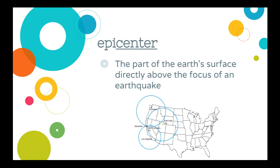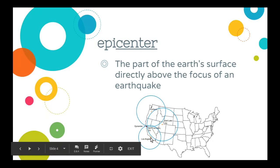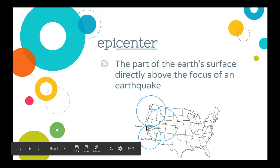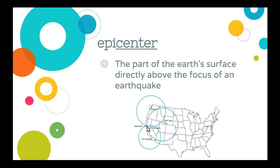'Epicenter' is your next word. This is the part of the earth's surface directly above the focus of an earthquake. On this map you can see some towns — Salt Lake City, Portland, and Los Angeles — and right here is the epicenter. You can see that this is the part of the earth's surface directly above the focus of an earthquake.